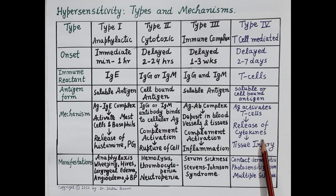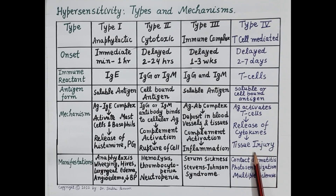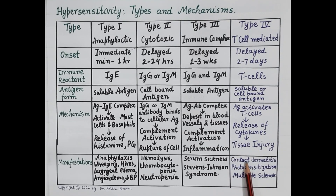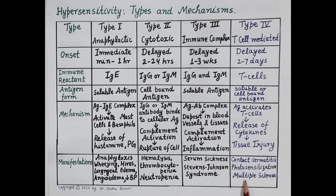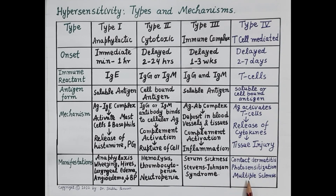Activation of T-cells causes release of inflammatory mediators called cytokines, and these cytokines produce tissue injury. Manifestations include contact dermatitis — that is red, itchy rashes on the skin — photosensitization, and multiple sclerosis, which is an allergic disease of the brain and spinal cord. An example is neomycin — an antibiotic cream that can cause contact dermatitis in individuals allergic to it.